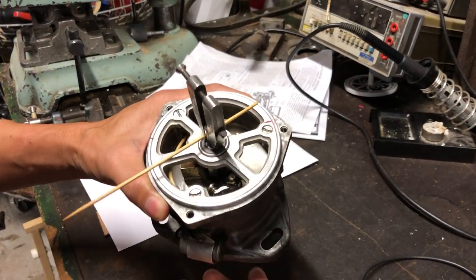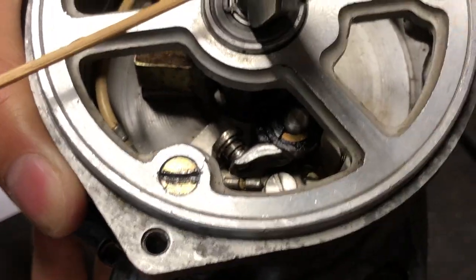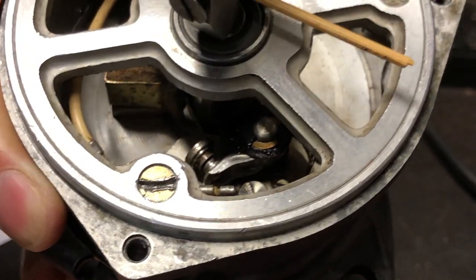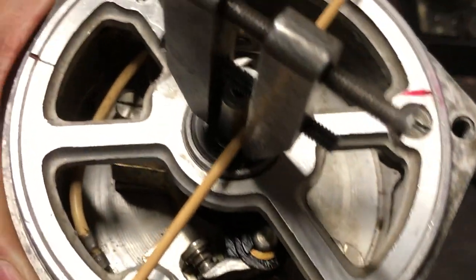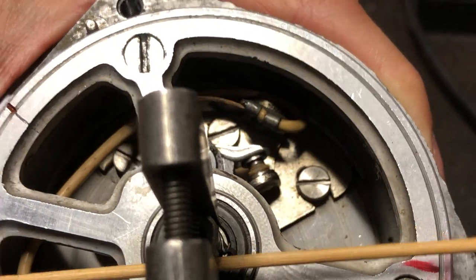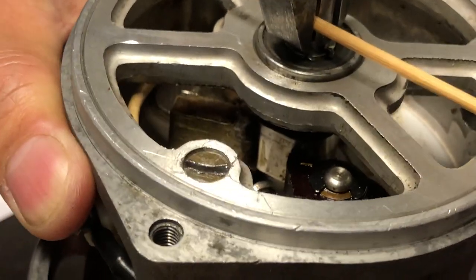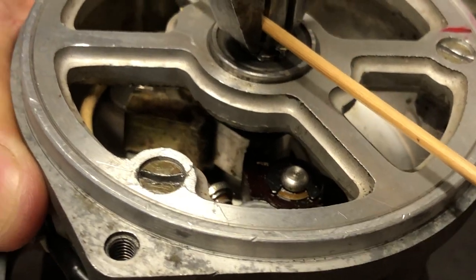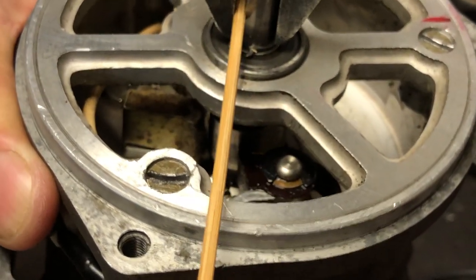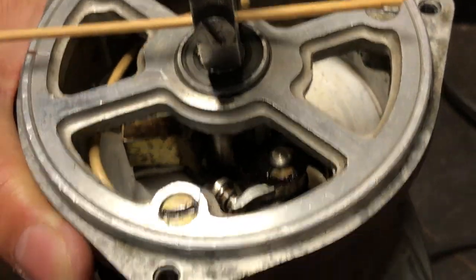In this case, this is a dual-point distributor. If you get way down in there, you can see that when I rotate, these points open. There's one point there, there's another set of points there. There's a little cam lobe that's hard to see right there.